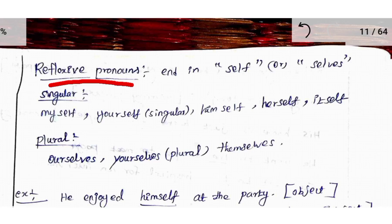Singular reflexive pronouns: myself, yourself, himself, herself, itself. Plural reflexive pronouns: ourselves, yourselves, themselves.